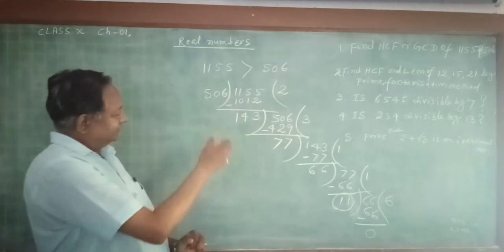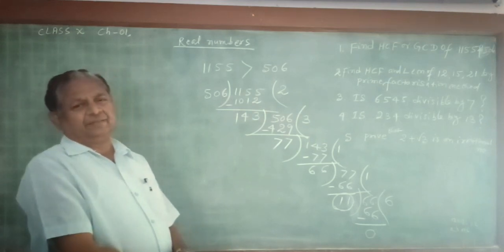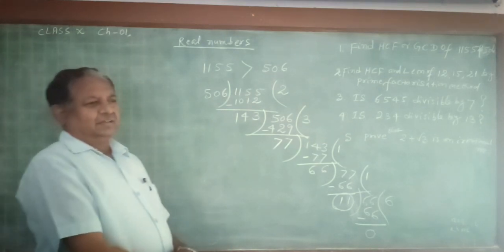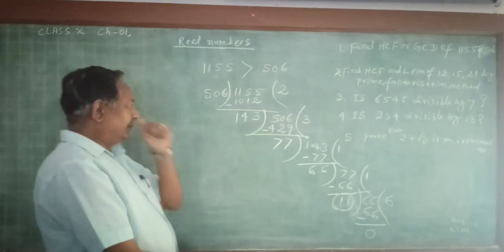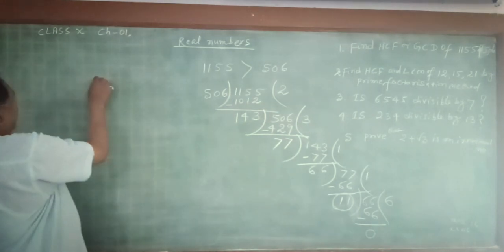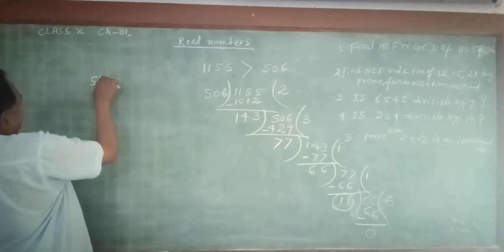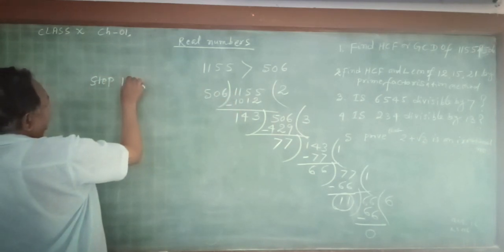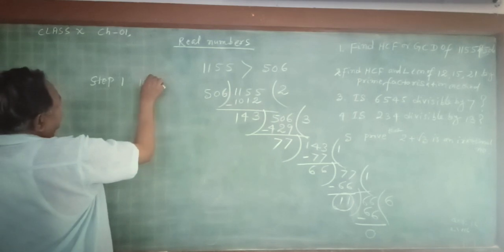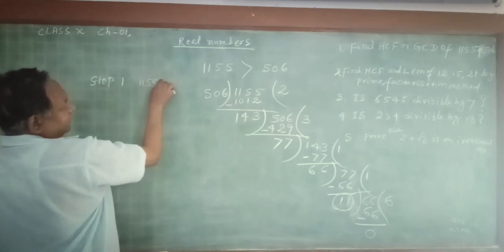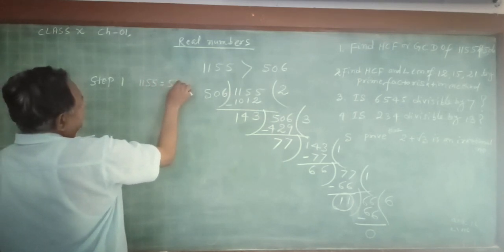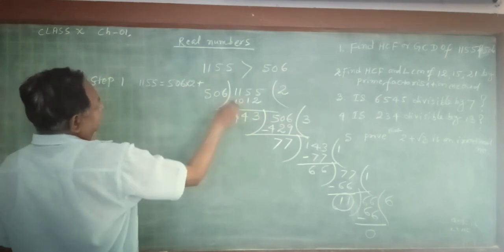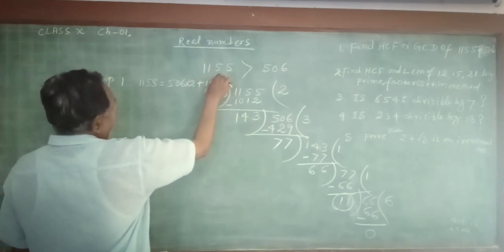Then we write it step by step. This is called Euclid's Algorithm. Step 1: 1155 can be written as 506 multiplied by 2, plus remainder 143.